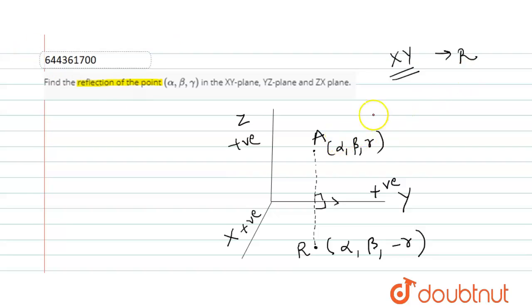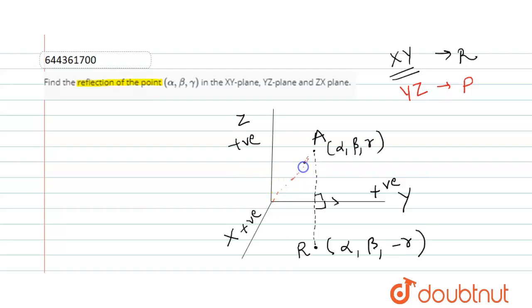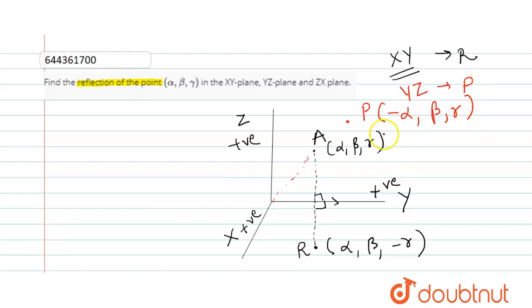Similarly, if we find the reflection of point A with respect to the YZ plane, call it P. The YZ plane is the plane behind — in that plane, X becomes negative. Extending the negative X direction, point P is the reflection behind the YZ plane, so the X coordinate becomes negative. Therefore, the coordinates of P are minus alpha, beta, gamma.